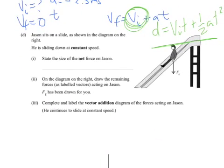Part D. We've got Jason sitting on a slider, shown in the diagram on the right. He's sliding down at a constant speed. As soon as you see constant speed, before you even look at the question, you should be thinking that the net force is zero. Constant speed means there's no acceleration. No acceleration means there's no unbalanced force. And part one straight away says state the size of the net force is going to be zero newtons. It's state. There's also a clue. It's not a calculation. So you need to understand the concepts of what's going on there.